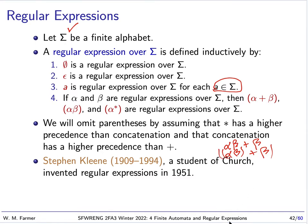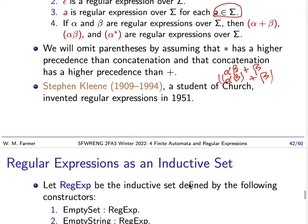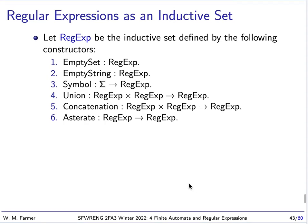Regular expressions were invented by Stephen Kleene, another great student of Alonzo Church, and he invented these in 1951. We can easily define regular expressions as an inductive set. It has six constructors: one to create the empty set symbol, one for the empty string, one for every symbol of our input alphabet, and then constructors for union, concatenation, and asterisk.